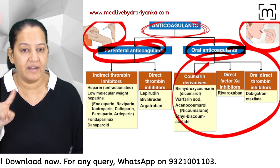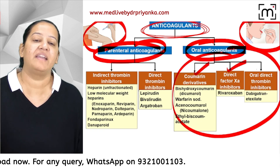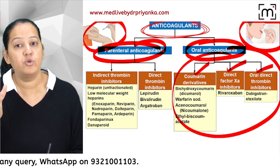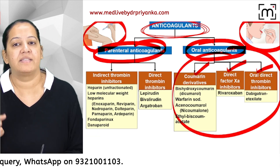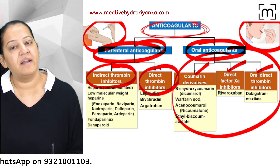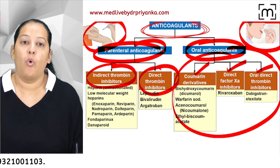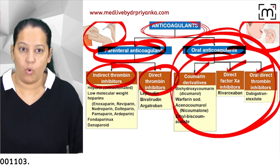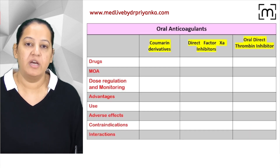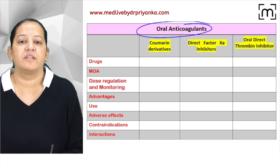Based on the route of administration, we divide them into two categories: oral and parenteral. Oral is further divided into three categories — coumarin derivatives, direct factor Xa inhibitors, and direct factor 2a inhibitors. Parenteral is further divided into indirect thrombin inhibitors and direct thrombin inhibitors.